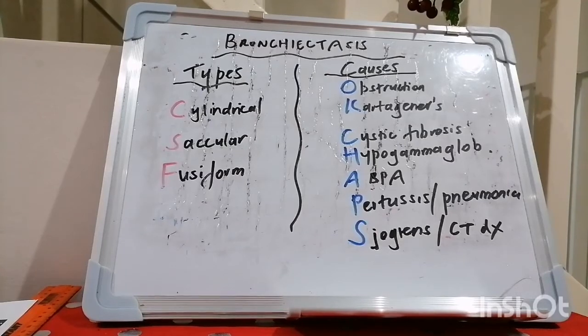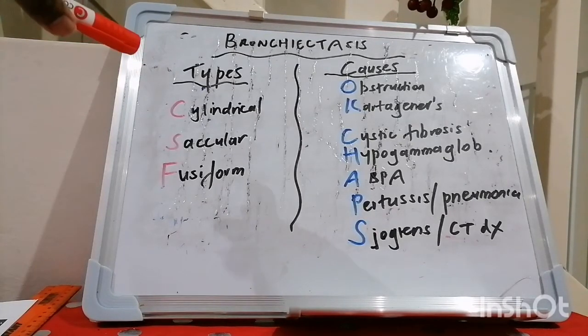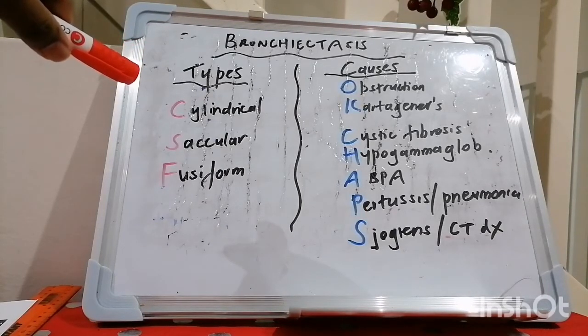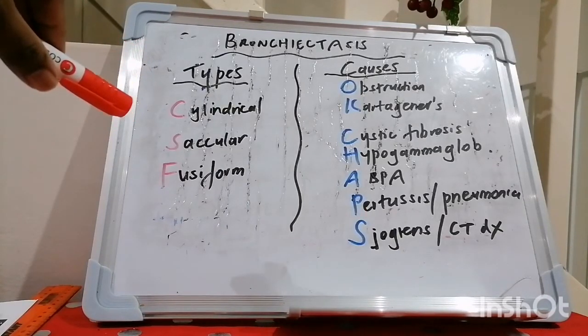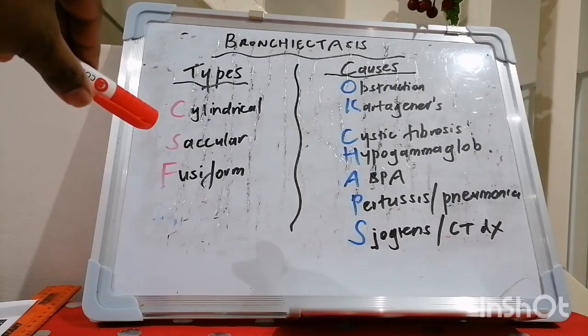In the cylindrical or tubular form, we have dilated airways alone. Sometimes this represents the residual effect of pneumonia and may resolve. The saccular form, also called cystic bronchiectasis, is the most severe form as we have progressive dilatation of the airways resulting in large cysts or saccules.